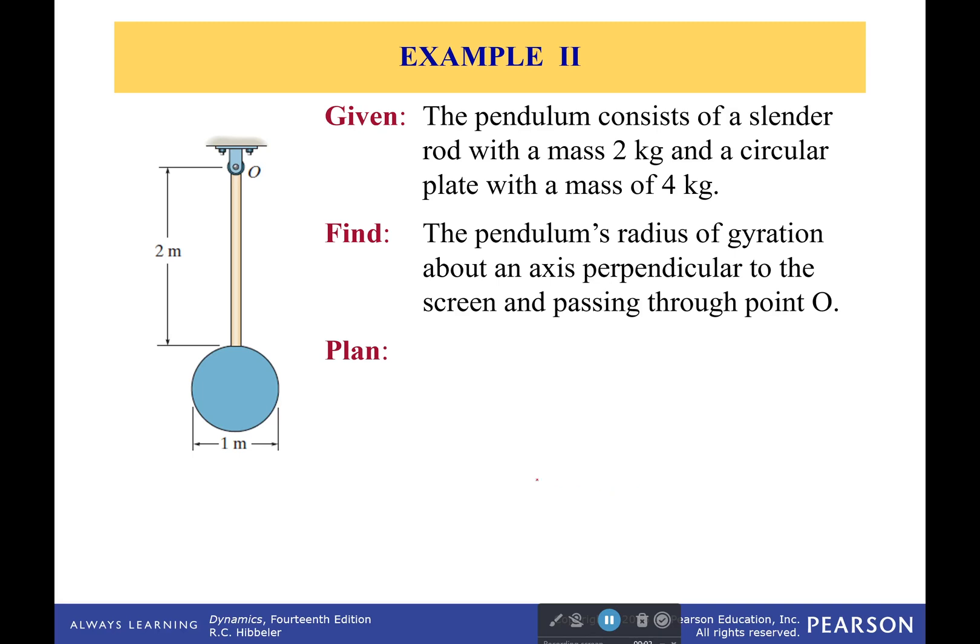Ok, let's do one more problem together. What we have here is a pendulum that consists of a slender rod with a mass of 2 kg and a circular plate with a mass of 4 kg. The pendulum's radius of gyration is what we want to find about an axis perpendicular to the screen and passing through point O.